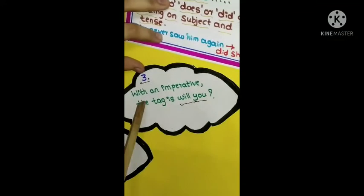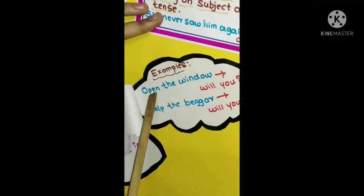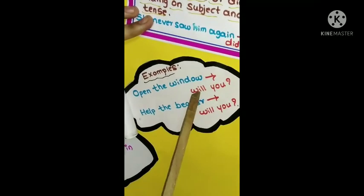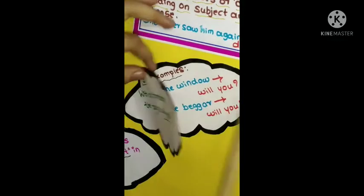With an imperative, the tag is will you. Examples: Open the window, it changes into will you. Help the beggar, it changes to will you.